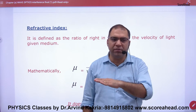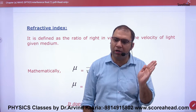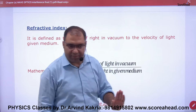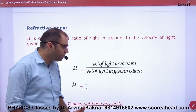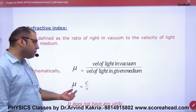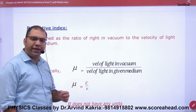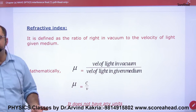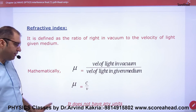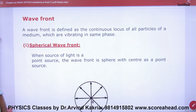The angle of incidence, the normal, and the reflected ray all lie in the same plane. The refractive index mu is defined as the speed of light in vacuum divided by the speed of light in a medium. So, the next concept is wavefront.